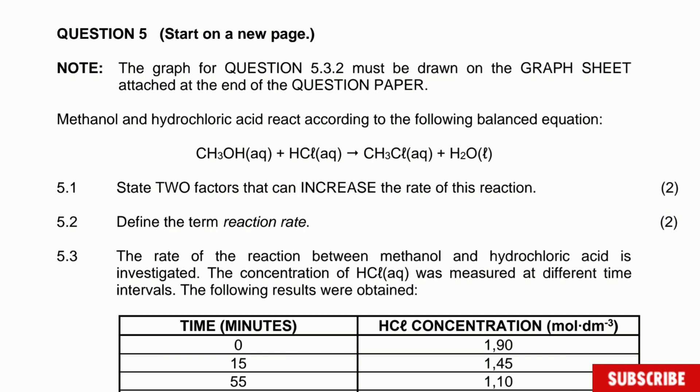Methanol and hydrochloric acid reacts according to the following balanced equation. Question 5.1: state two factors that can increase the rate of this reaction. It's important — we're looking for factors that can increase the rate of this specific reaction, not any reaction.